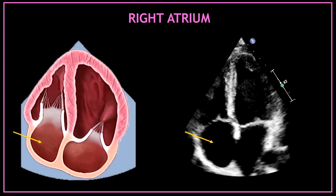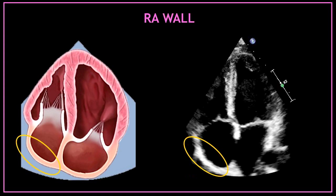The right atrium is also seen in this view. The right atrium is this black rounded echo-free space under the tricuspid valve. This echogenic line at the bottom of the screen is called the right atrial wall.